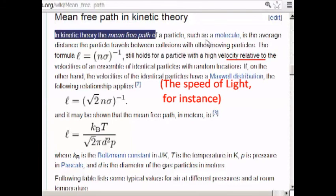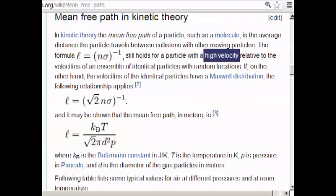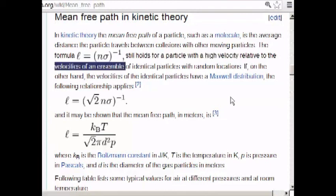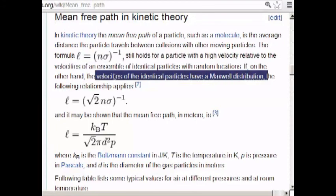In kinetic theory, the mean free path of a particle, such as a molecule, is the average distance the particle travels between collisions with moving bodies. The formula l equals one over n sigma still holds for a particle with high velocity relative to the velocities of an ensemble of identical particles with random locations. So that's a high velocity particle relative to the velocities of the rest of the particles.